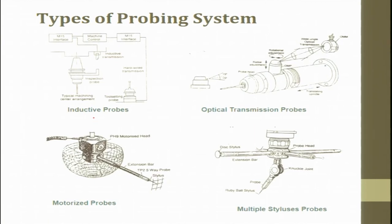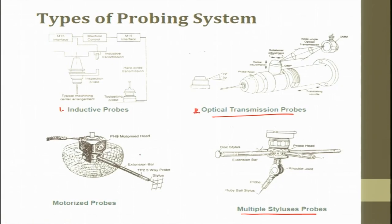Different types of probing systems include: inductive probing systems using inductive transmission; optical transmission probes; motorized probes in which motors rotate or move the probe; and multiple stylus probes. In the first three types, only one stylus is used. In the multiple stylus probe, the system can be motorized or inductive but has multiple styluses — a ruby stylus, disc stylus, and other different styluses. This is the probing system.